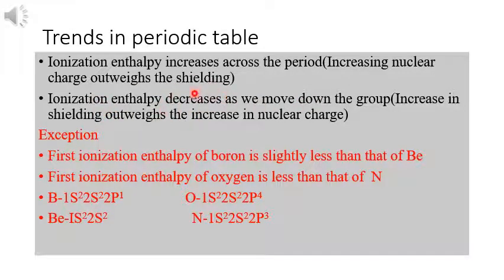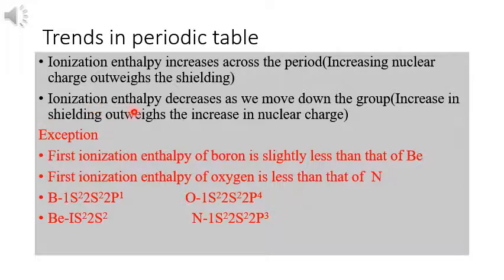As we move down a group, the number of shells increases, which makes the shielding more effective. The shielding outweighs the increase in nuclear charge, so ionization enthalpy decreases as we move down the group.